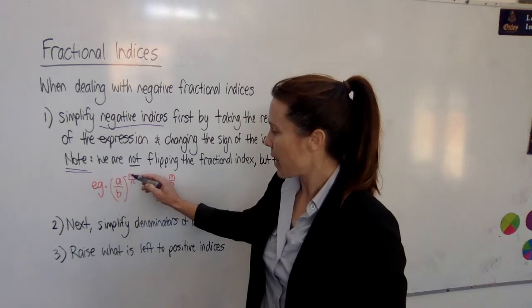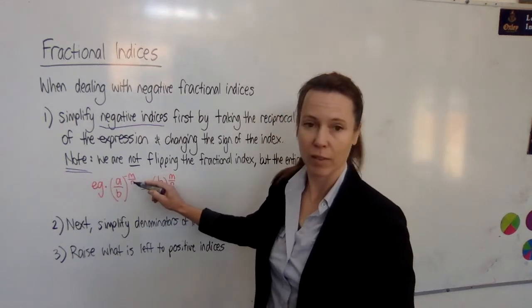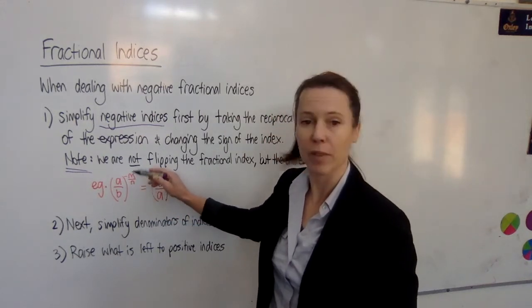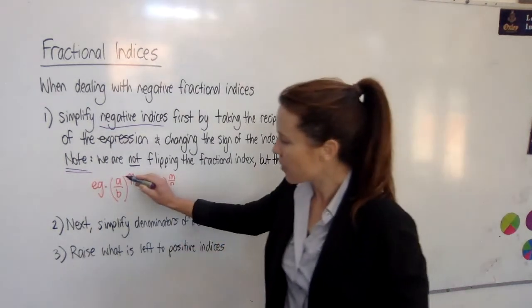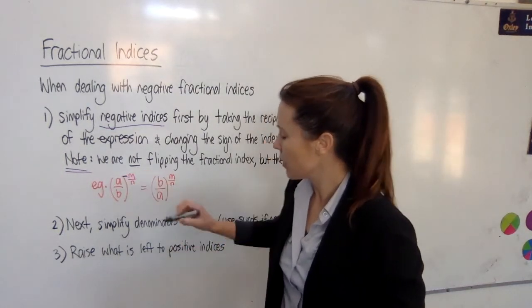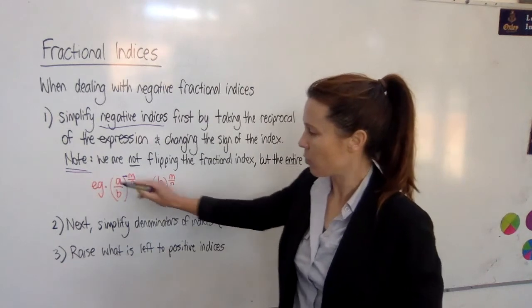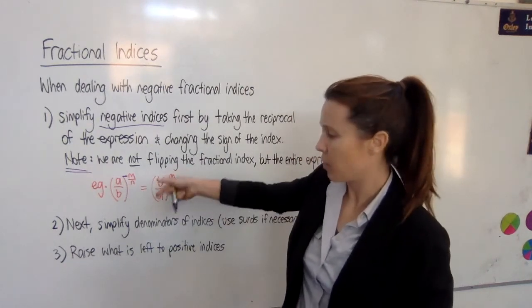And you're raising it to a negative fraction that has something other than one for the numerator and the denominator. Then to get rid of this little negative that's up here, you can rewrite the expression with the actual base flipped upside down.